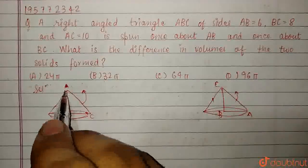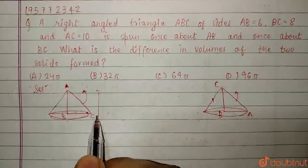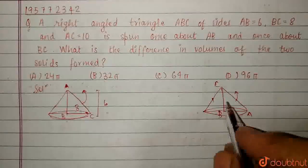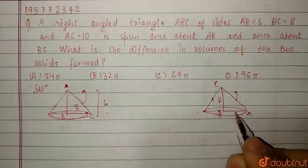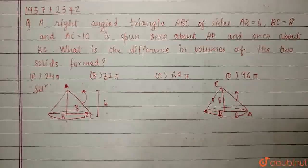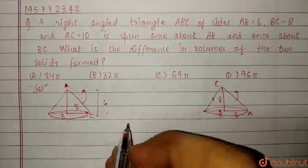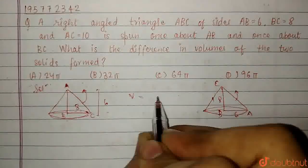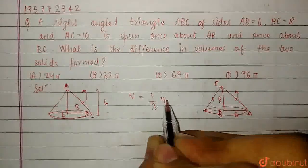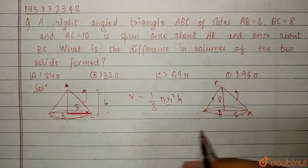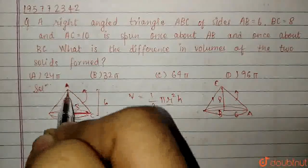It is given that AB is equal to 6, BC is 8. So it forms a cone, so we have the volume of cone. Volume of cone is 1 by 3 pi r square h, where r is the radius of the base and h is the height of the cone.